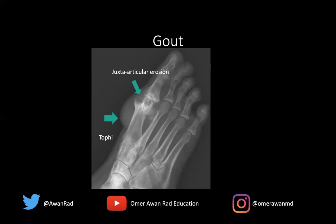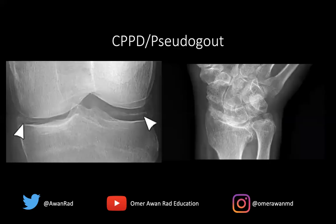Typically we treat this with NSAIDs, steroids, colchicine, but chronic gout is usually treated with allopurinol. So that's what gout will look like on the USMLE.